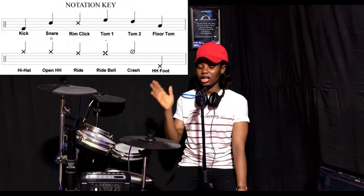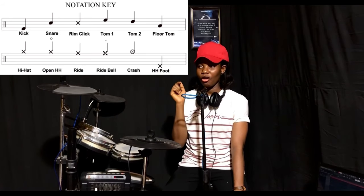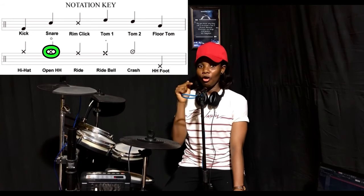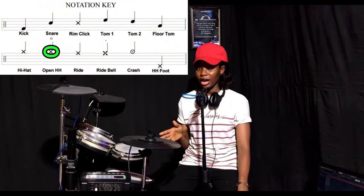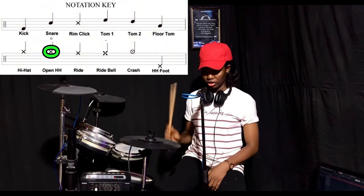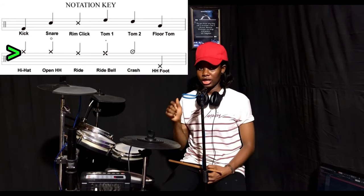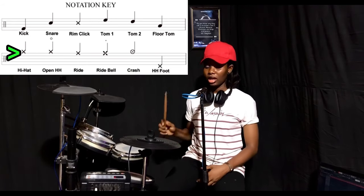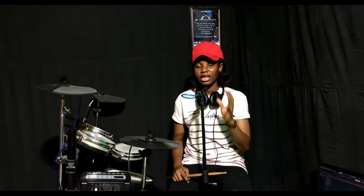The cross sign refers to the cymbals. When there's an 'o' on the cross sign, it means you have to play an open hi-hat. If it is a cross on it, it means a closed hi-hat. Right after knowing the notations on a staff, the next thing you're going to see at the beginning of every staff is the time signature.